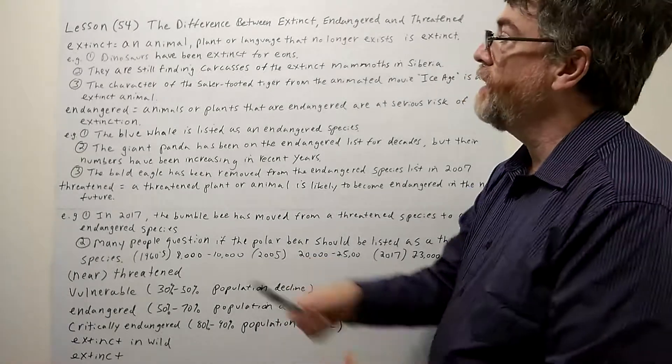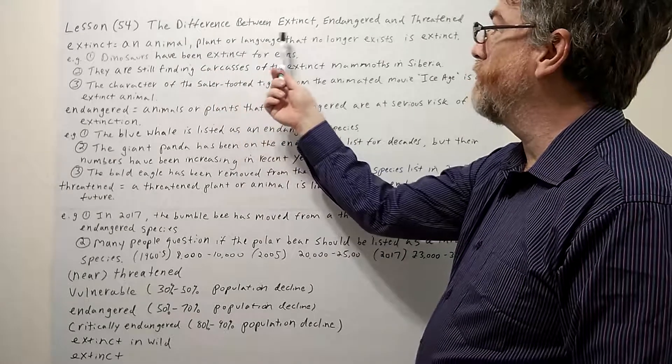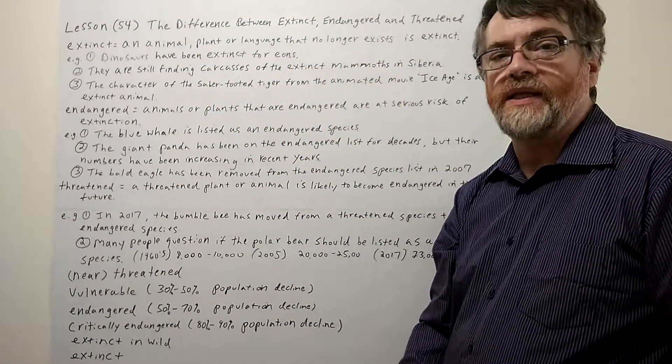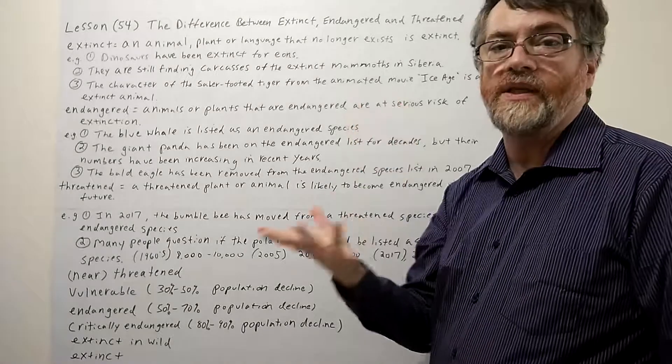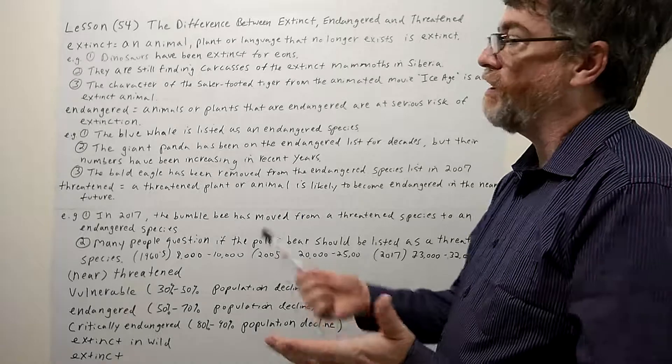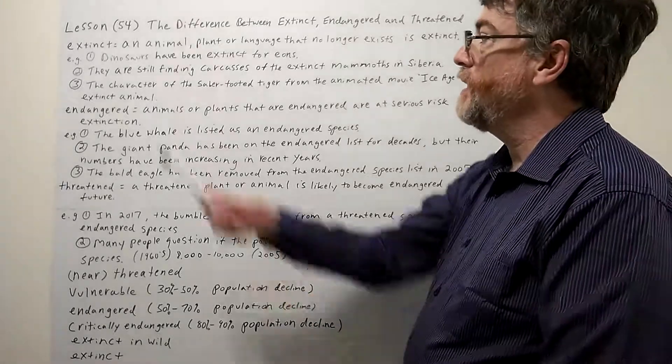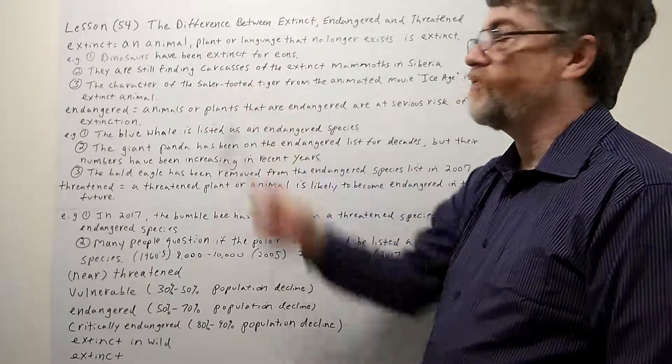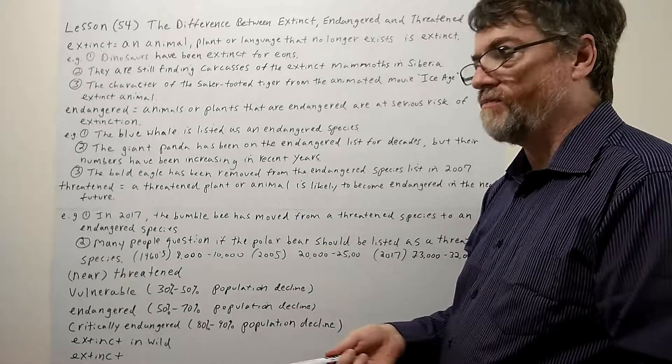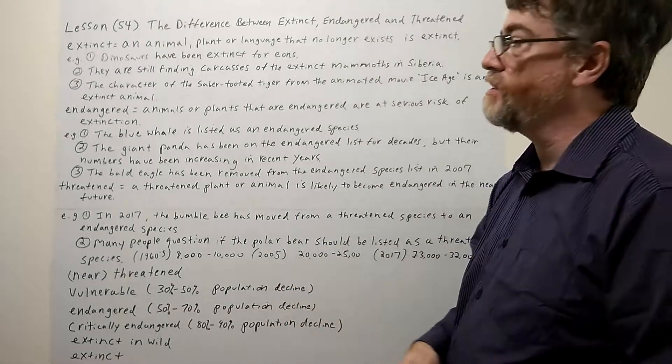Extinct is probably the easiest one. An animal, plant, or language that no longer exists is extinct. So basically means we are down to zero, or at least zero that we know of. So, first example: dinosaurs have been extinct for eons, for thousands and thousands, some people might even think millions of years.